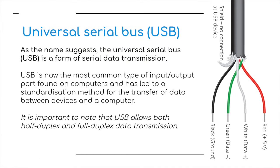Now let's move on to Universal Serial Bus. As the name suggests, USB is a form of serial data transmission. It is now the most common type of input-output port found on computers and has led to a standardized method for the transfer of data between devices and a computer. Importantly, USB allows both half-duplex and full-duplex data transmission.